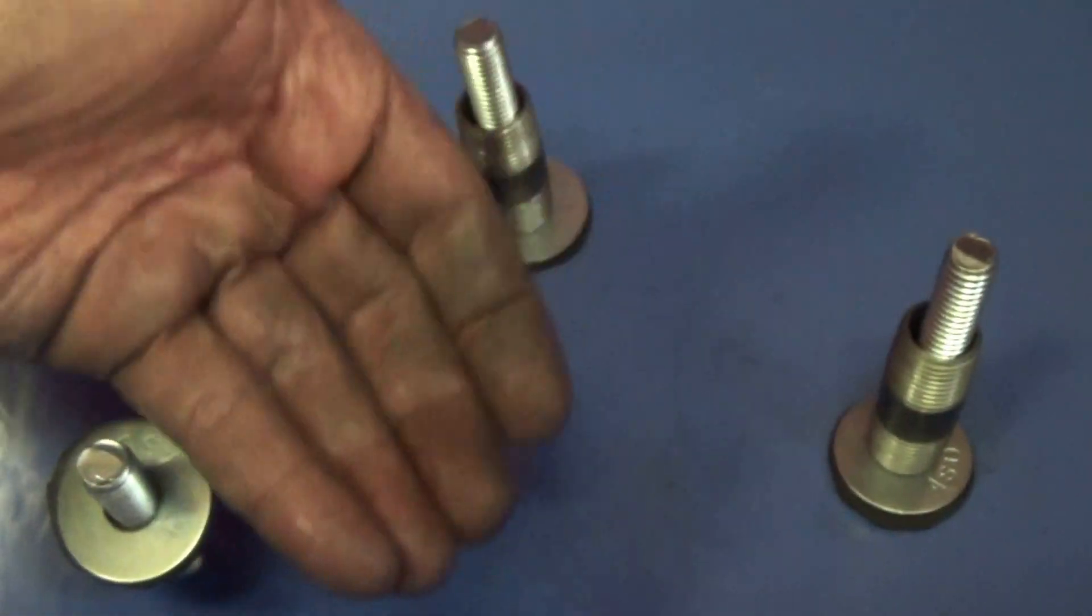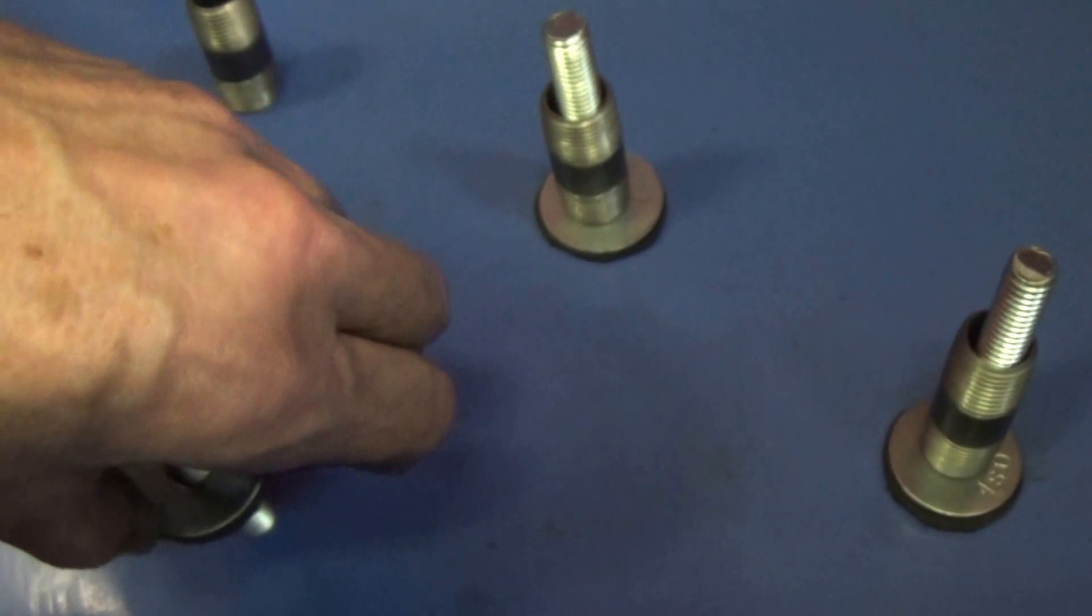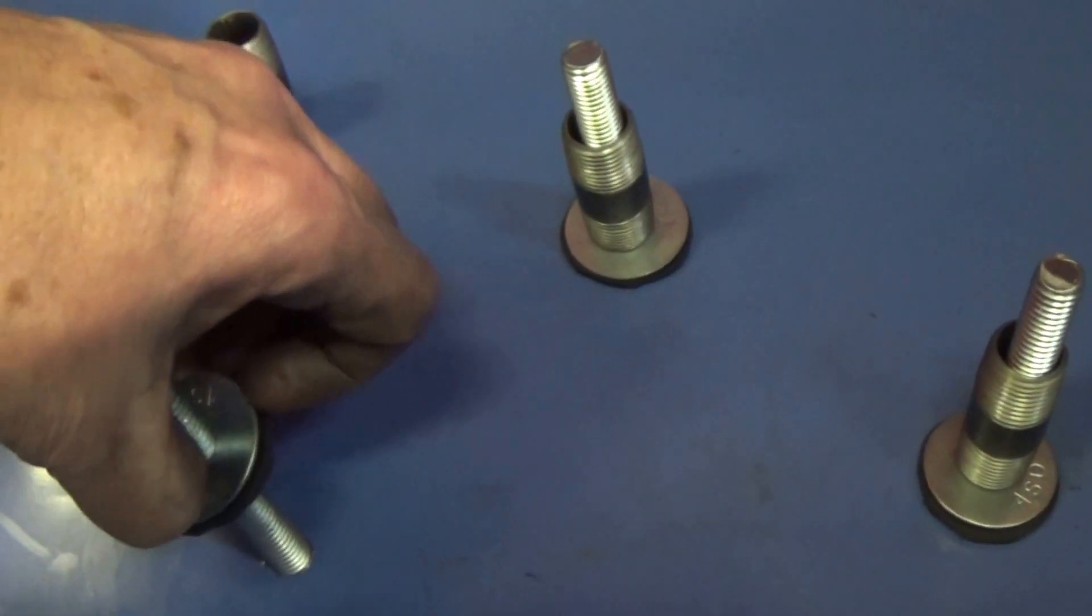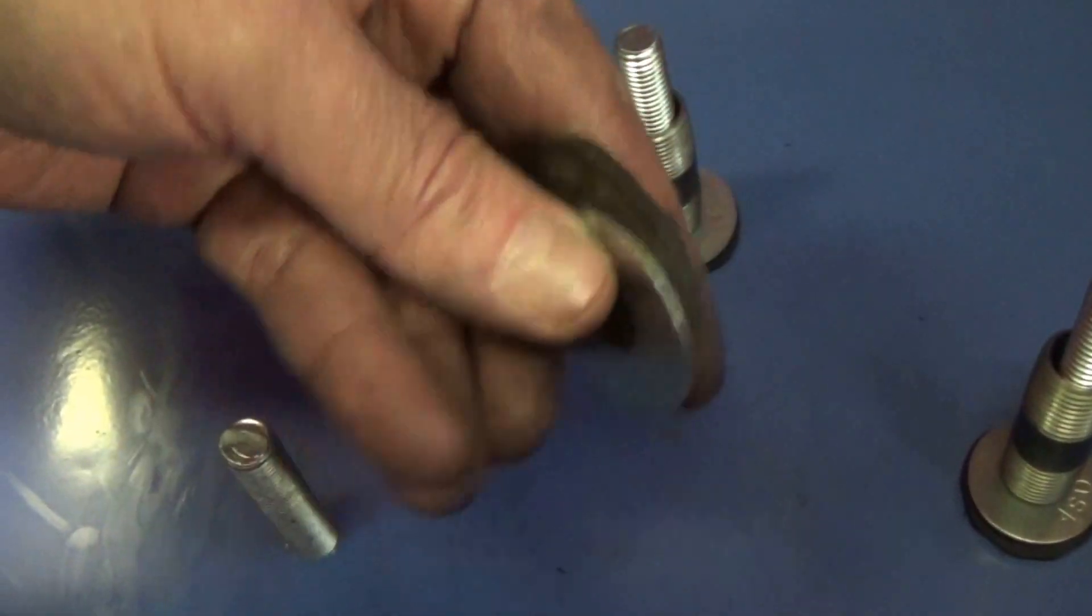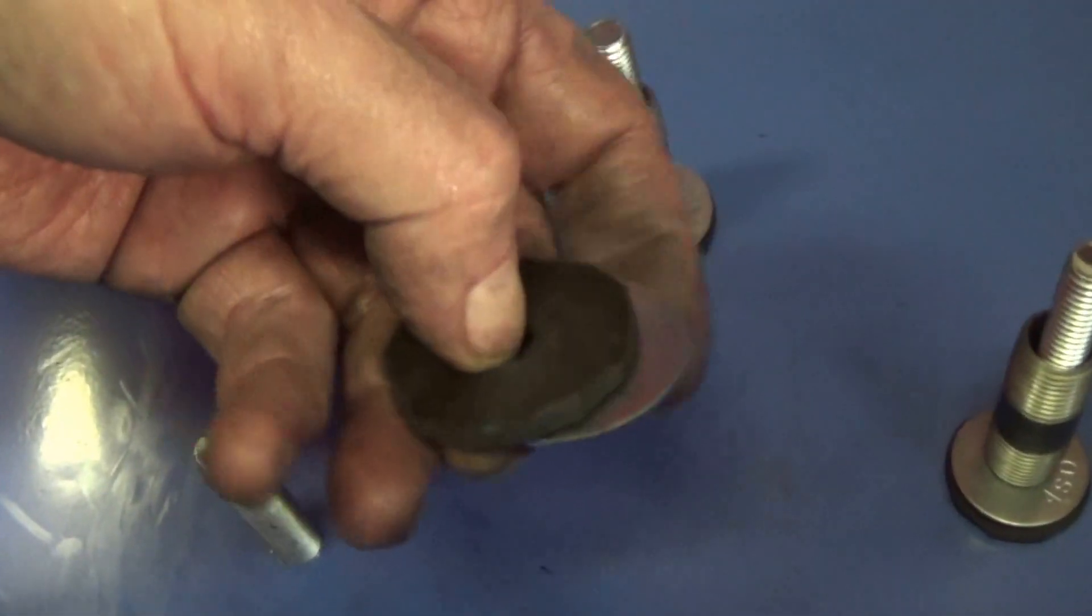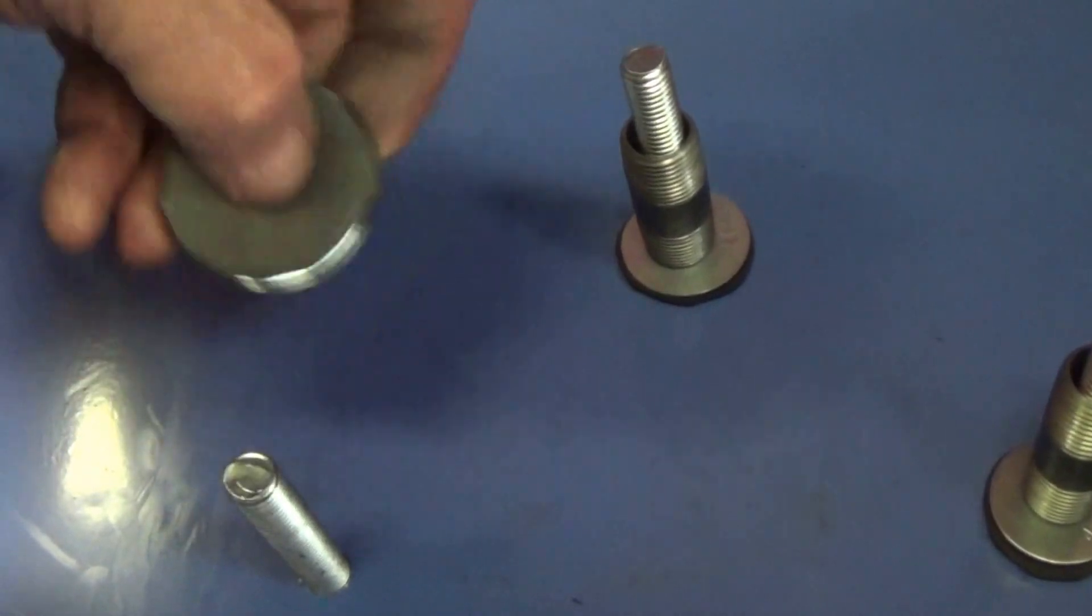I got the same thing on the bottom side. I got this washer between the head of the bolt. I got the same setup underneath, just like this, on the bottom side to seal it.